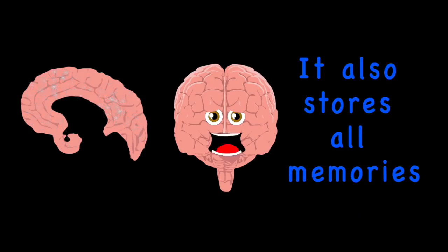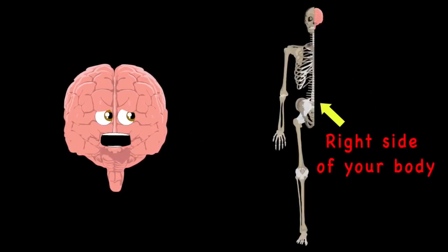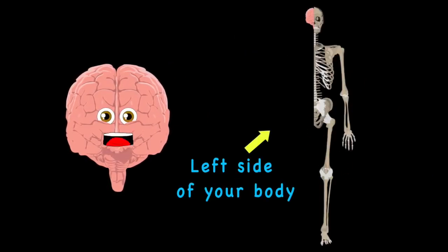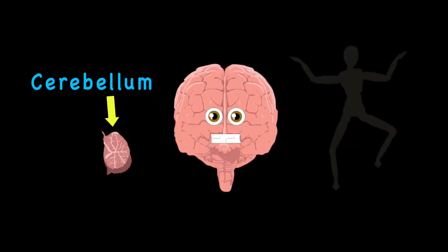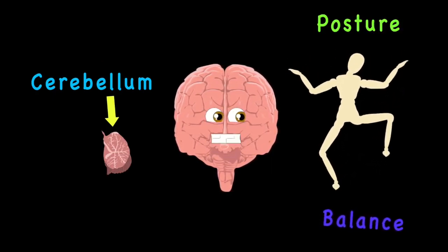without it you would struggle. The left cerebrum controls the right side of the body and the right cerebrum controls the left though it is tiny. The cerebellum controls your posture and your balance. The coordination of your movement is